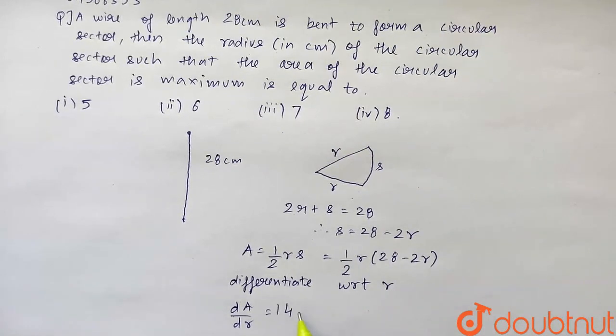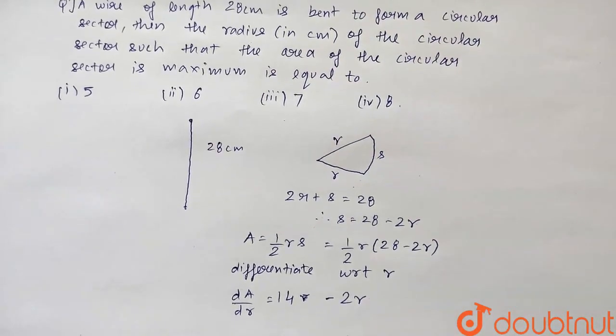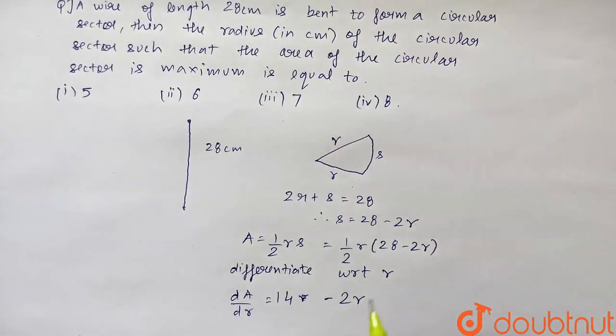So 14R, R is the variable so it will become 1 and minus we will get R square so it will be 2R. So it will be 14 minus 2R. Now differentiation should be 0 because we have to find the maximum area.